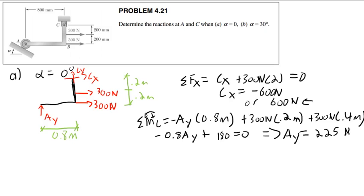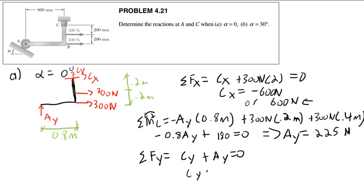AY is 225 newtons. Then I can simply say the sum of forces in the Y direction: CY plus AY equals 0. CY plus 225 equals 0, so CY equals negative 225 newtons.